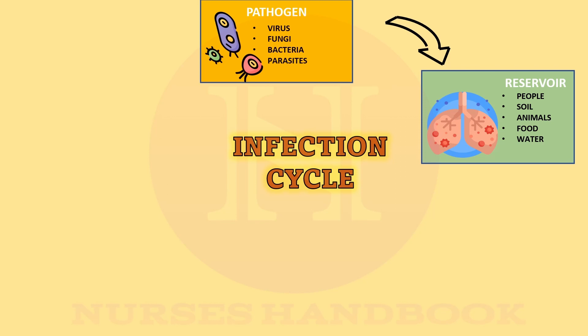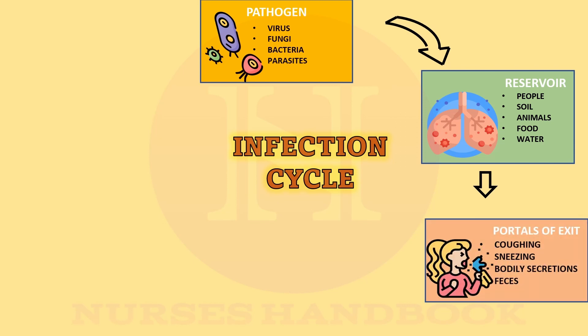The third element is the route of exit — an exit route for the pathogen to escape its reservoir. For example, if a human being is the reservoir, then the portal of exit can be urine, vomit, sputum, blood, feces, etc.